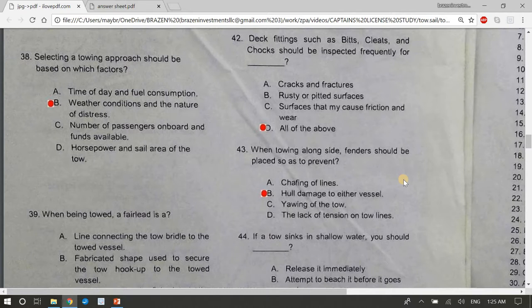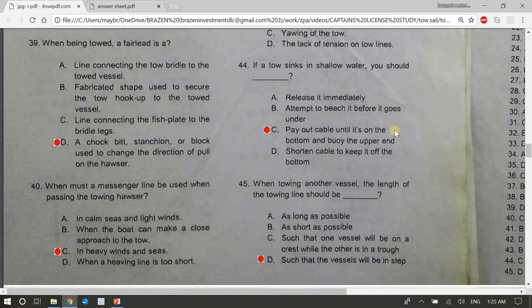43, when towing alongside, fenders should be placed so as to prevent B, hull damage to either vessel. 44, if a toe sinks in shallow water, you should blank. The answer is C, pay out cable until it's on the bottom and buoy the upper end. The answer is C, pay out cable until it's on the bottom and buoy the upper end. 45, when towing another vessel, the length of the towing line should be blank. The answer is D, such that the vessels will be in step.